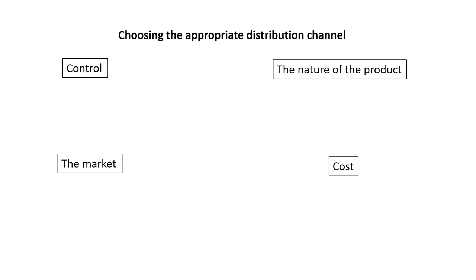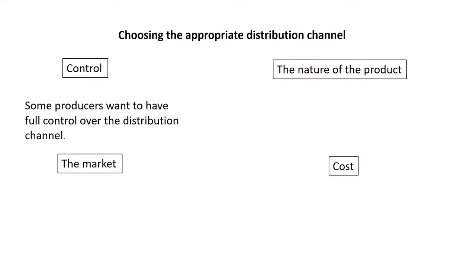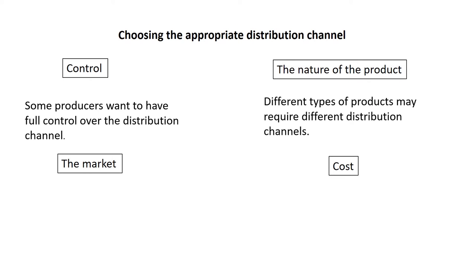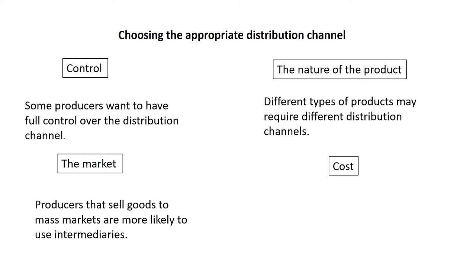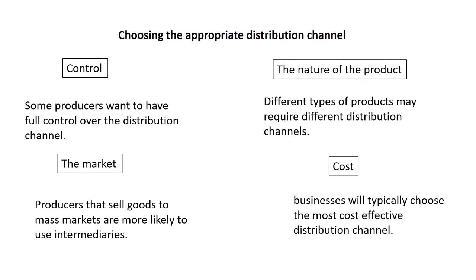When a producer chooses the appropriate distribution channel, several elements are involved. Control — some producers want full control; for example, producers of exclusive products may not want them sold in outlets that don't align with their brand image. The nature of the product matters, as different products may require different channels. The market — producers selling to mass markets are more likely to use intermediaries. Cost — businesses typically choose the most effective channel, and many producers have websites to sell directly to consumers in order to keep costs low.